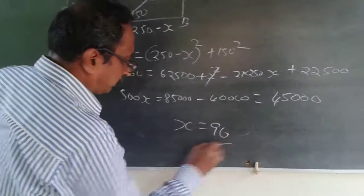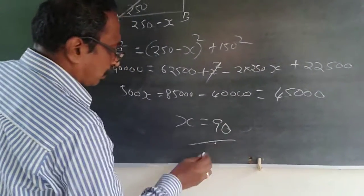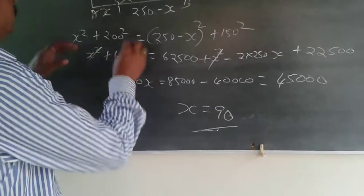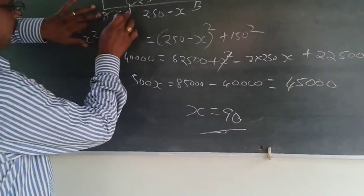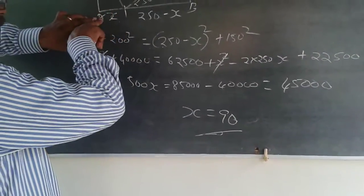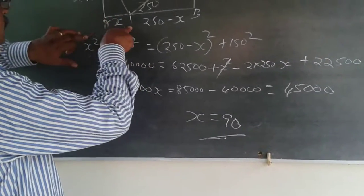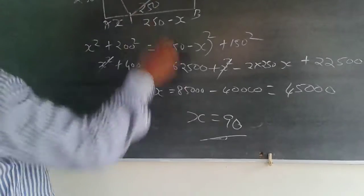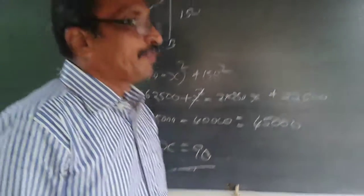So x = 90. The answer is 90. The distance of the feed from Tower A is 90 feet.